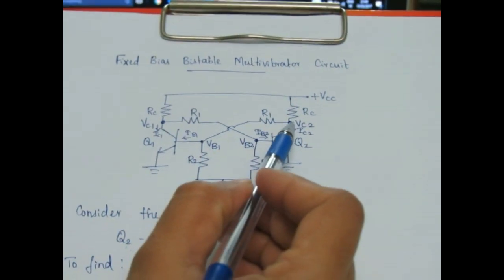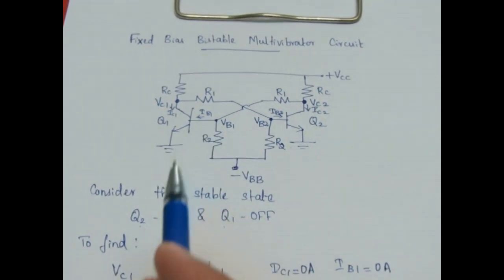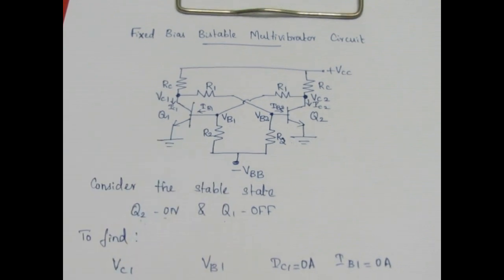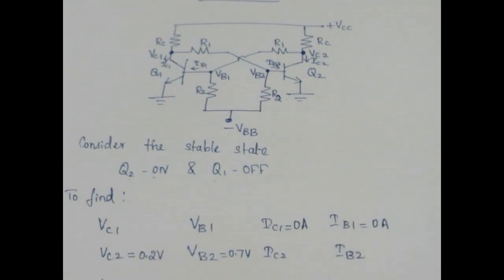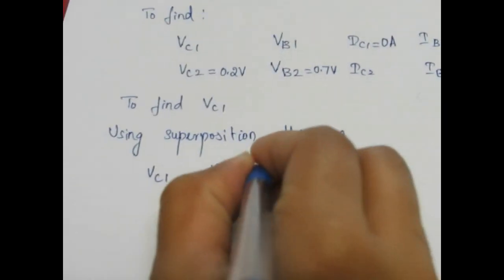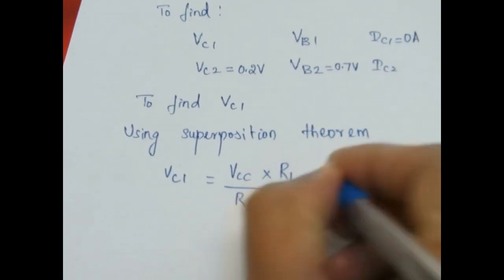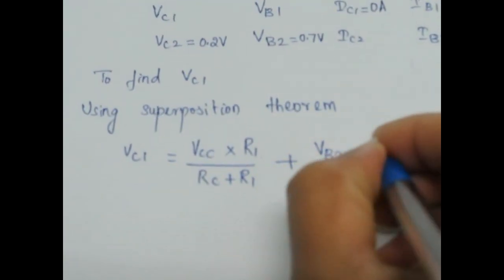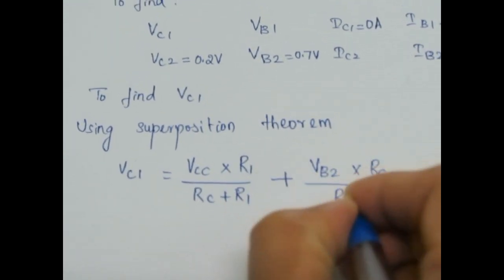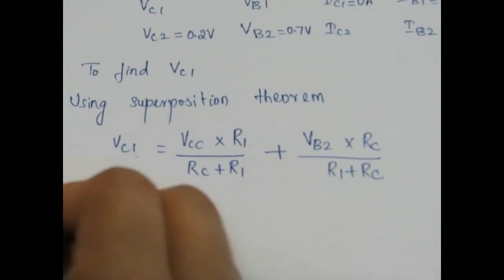Using superposition theorem: with one supply voltage short-circuited, find VC1; then short-circuit the other supply voltage and find VC1 again. First, short-circuit VB2 — then VC1 equals VCC times RC divided by (R1 + RC). Next, short-circuit VCC — then the contribution is VB2 times RC divided by (R1 + RC). Adding both, we can find VC1.